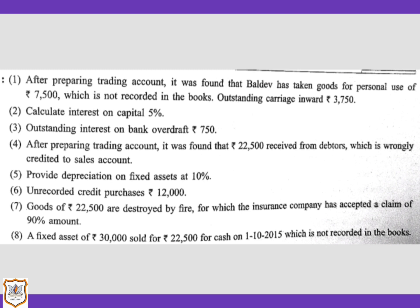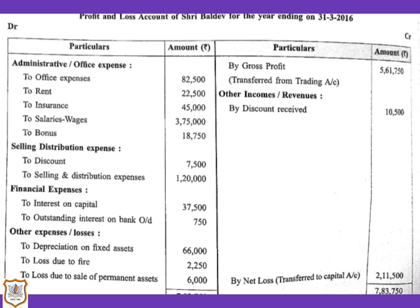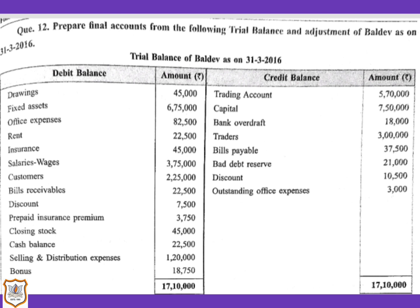We need a corrected trading account because in the adjustments, some errors are found after the trading account was prepared. In adjustment one, it was found that Baldev had taken goods for personal use of Rs. 7,500 which was not recorded in the books. In adjustment four, Rs. 22,500 received from debtors was wrongly credited to sales account. In the trial balance, trading account on the credit side shows an amount of Rs. 5,70,000.